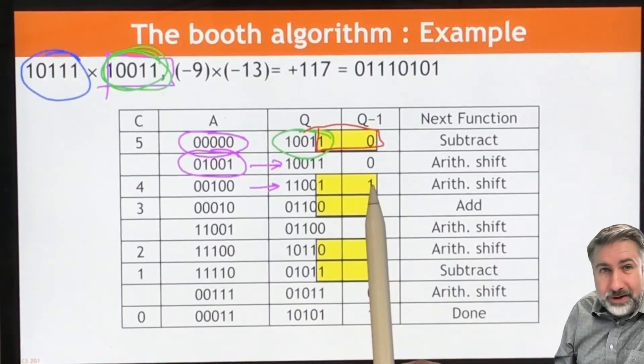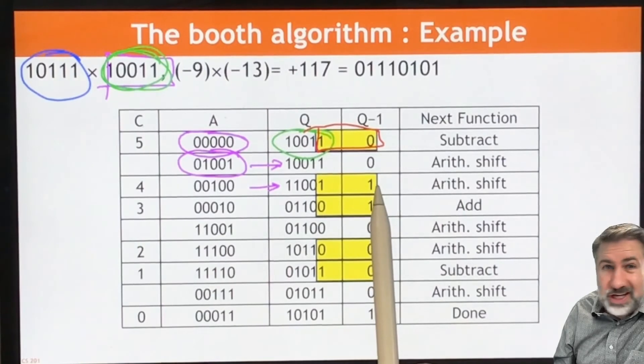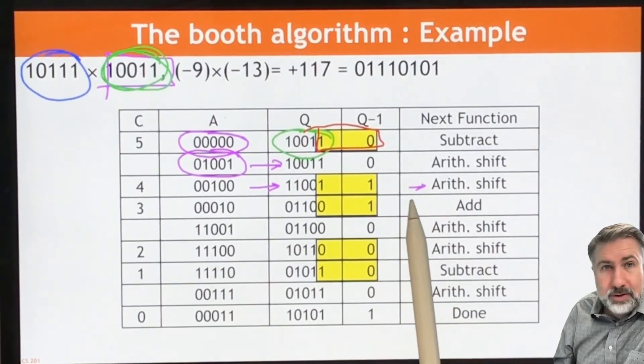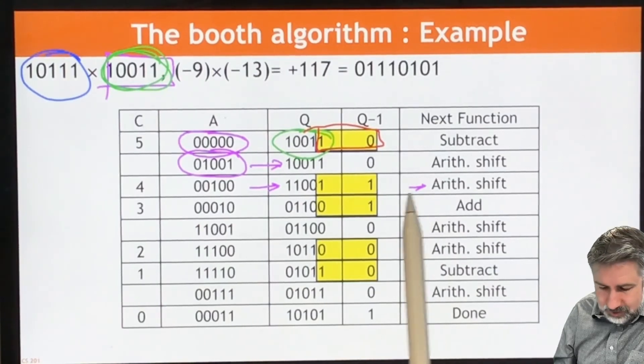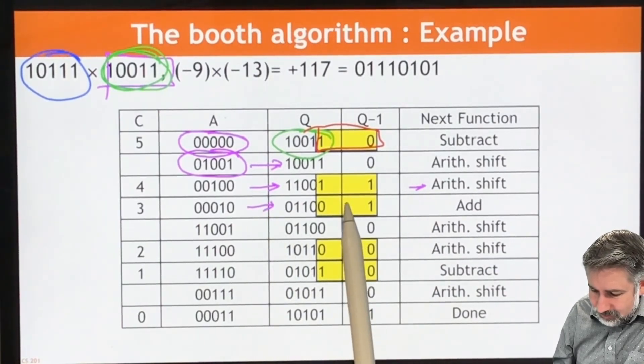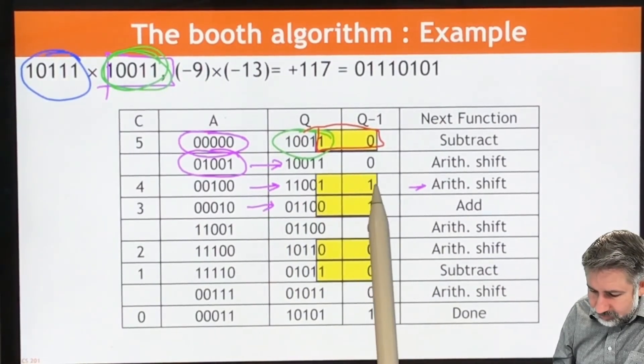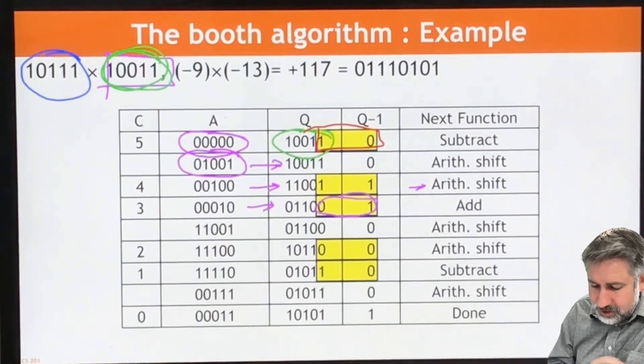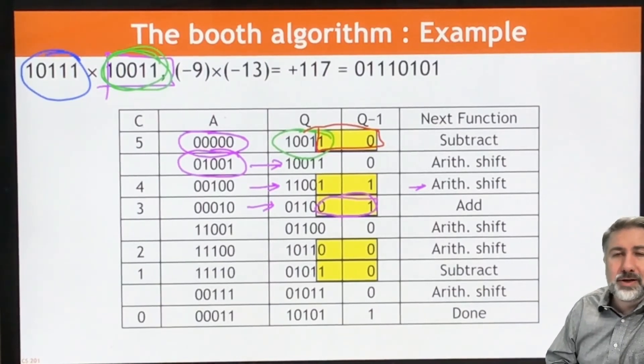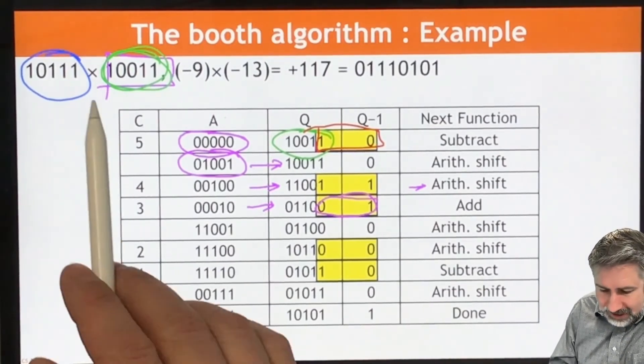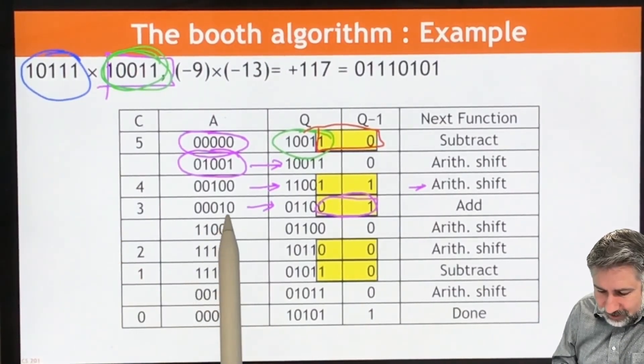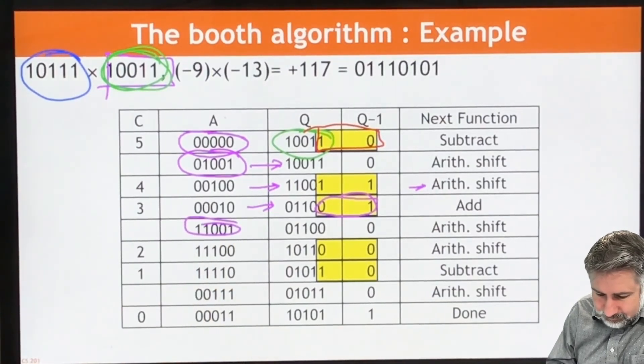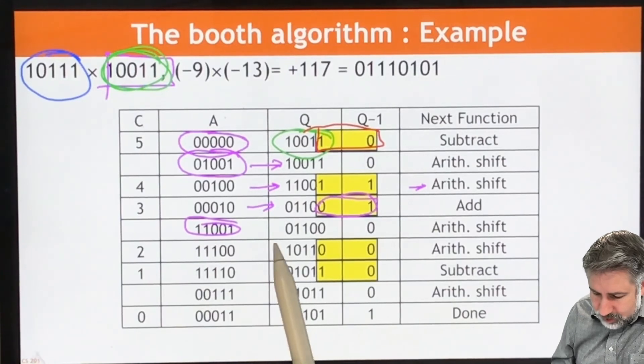And then we can look at the next two bits. The next two bits are one and one. Our algorithm said, if the bits are the same, we don't do anything. All we do is shift. So we're going to do our arithmetic shift. We're going to do it again. We're going to do our arithmetic shift here. And this is going to give us our result. Then we're going to look at these two bits, zero and one tell us we should add the multiplicand. So we're going to take negative nine and add it to this value that has been shifted. And we get this new value.